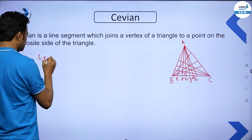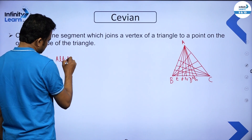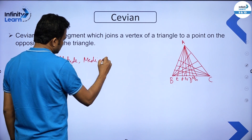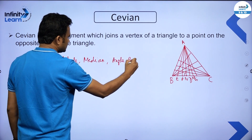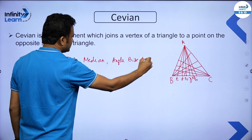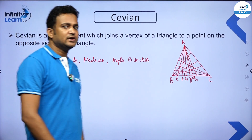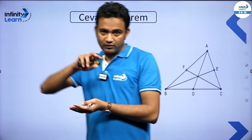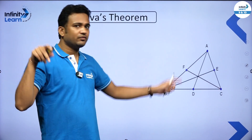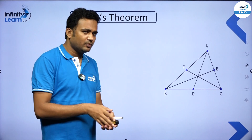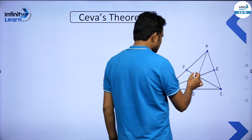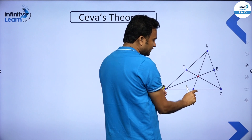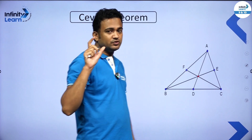The examples of cevians of a triangle are: altitude, median, and angle bisector. Now, what is Ceva's theorem? If you draw three cevians from three vertices of a triangle and they pass through a common point, this is the necessary condition to apply Ceva's theorem. These three cevians should be drawn from three different vertices and they should be concurrent - meaning passing through the same point.